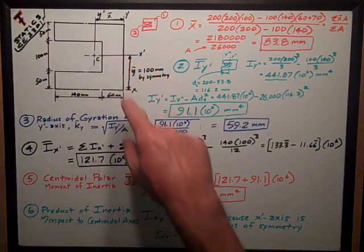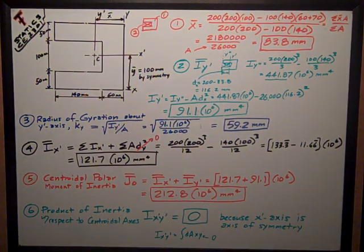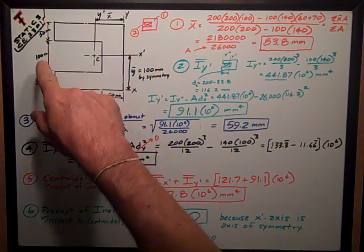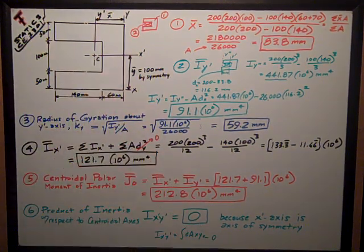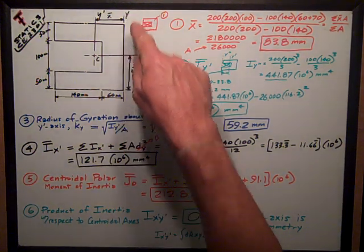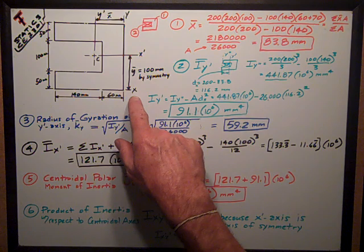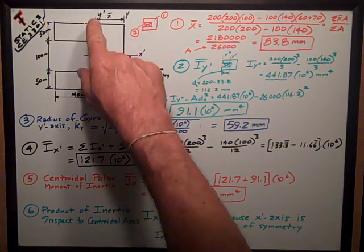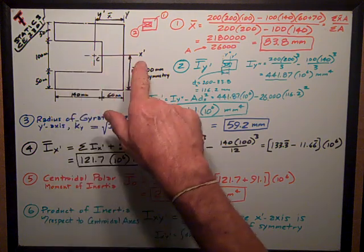I've got a C-shaped area of these dimensions, 50, 150, and 140 by 60. And I've got a y-axis and an x-axis down here on the right side. And I've drawn in the centroidal y-prime and the x-prime axis.